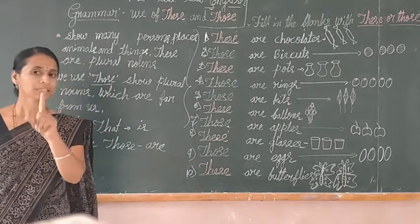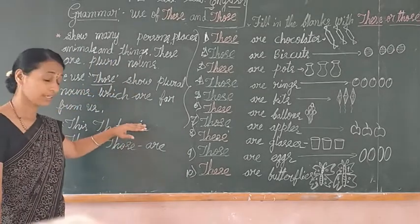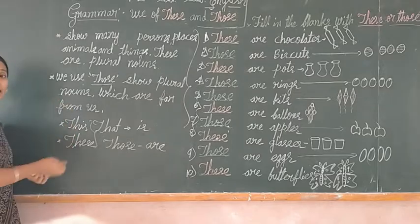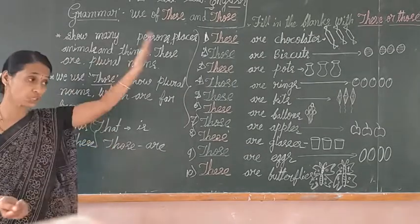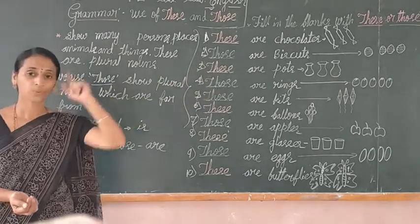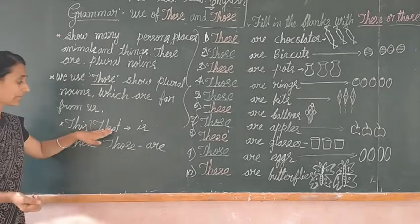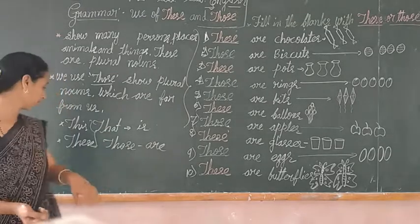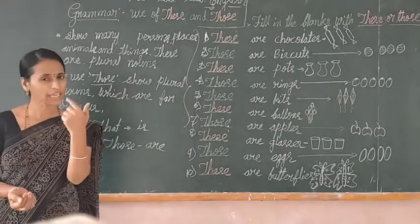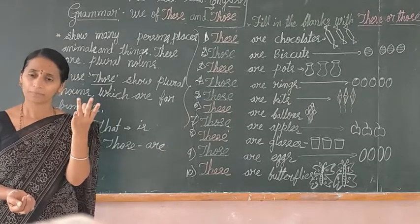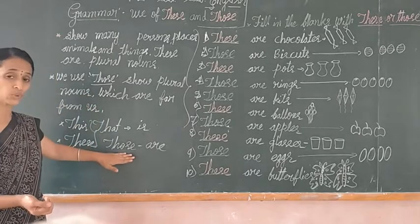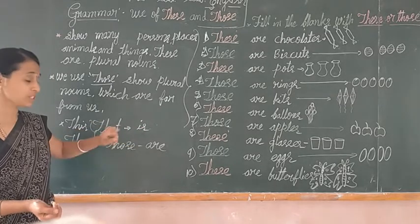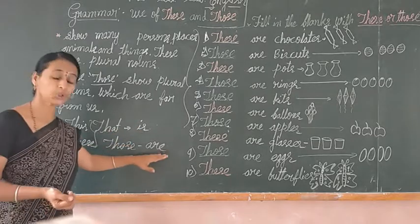Remember: 'this' and 'these' are used for things near to me; 'that' and 'those' are used for things far away from me. 'This' and 'that' are singular; 'these' and 'those' are plural — for persons, places, animals, or things. In sentences, use 'is' for singular and 'are' for plural with these/those.